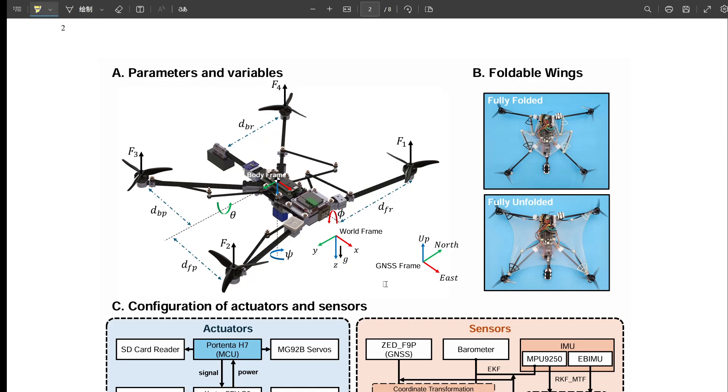And tiny servo motors control the arms, folding and unfolding the wings. Keeping it lightweight seems critical, right? You don't want the wings themselves to hinder agility. Absolutely critical. You don't want to burden the main propellers. That low mass is a deliberate design choice.